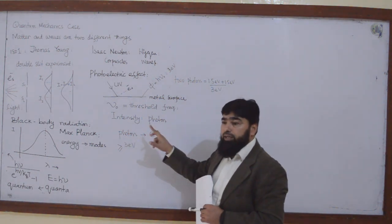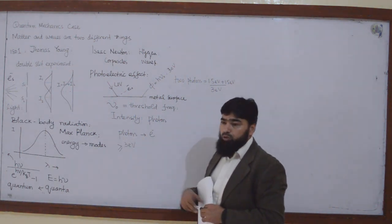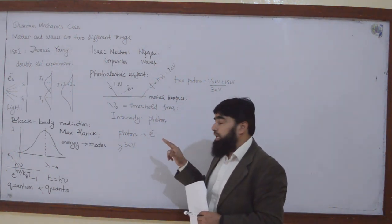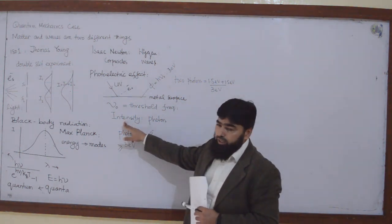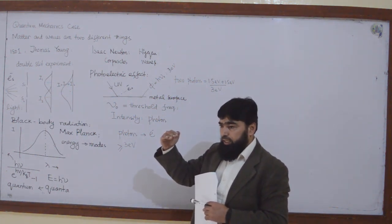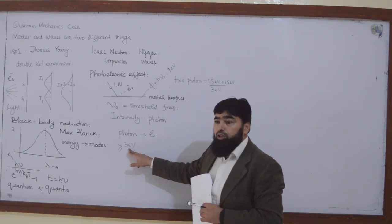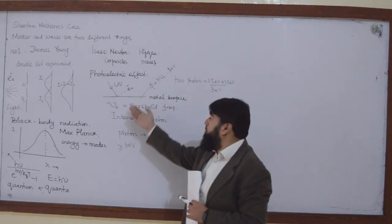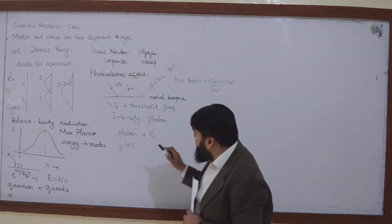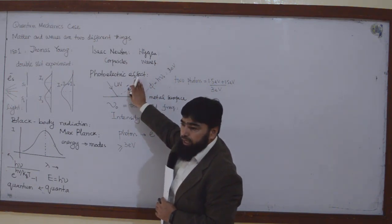So one photon will interact with one electron. The individual energy of the photon must meet the threshold energy or threshold frequency. That is why, until you reach the threshold energy, electrons will not be ejected regardless of intensity. But once each incoming photon has energy greater than the threshold, increasing the number of photons increases the number of ejected electrons. This was the principle Einstein established to resolve the photoelectric effect.